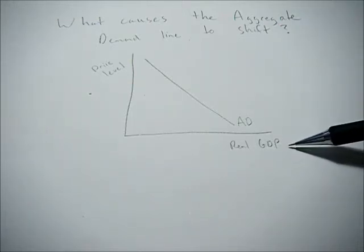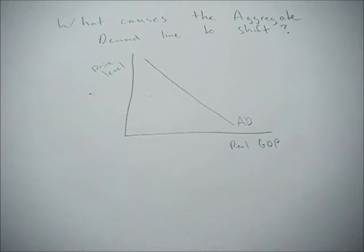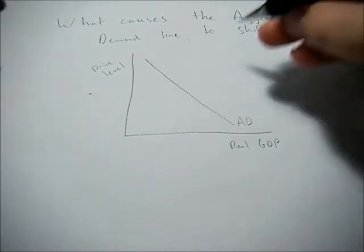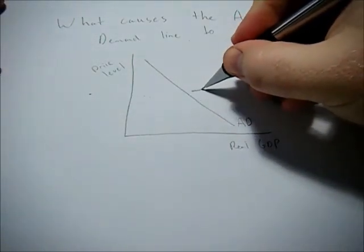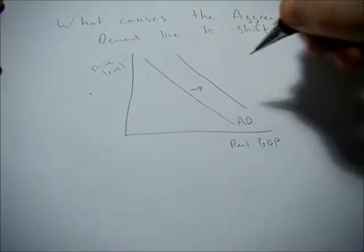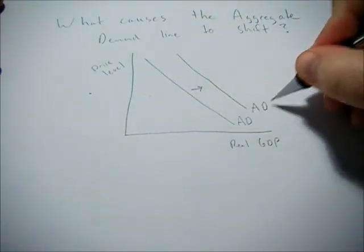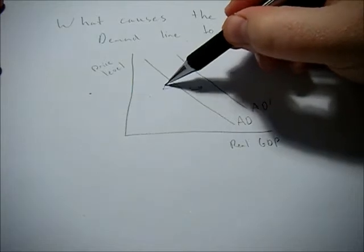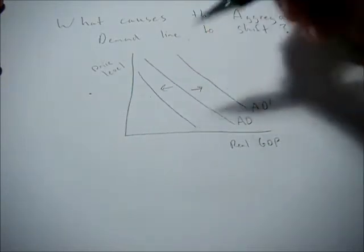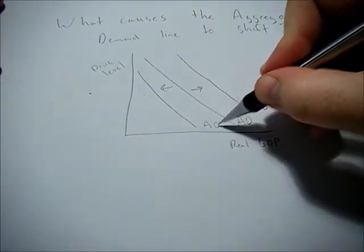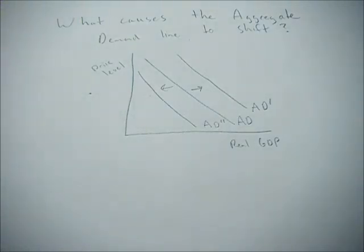On the axes, we have real GDP and price level. What can happen when things in the economy change is aggregate demand can shift right or increase, or aggregate demand can shift left or decrease.